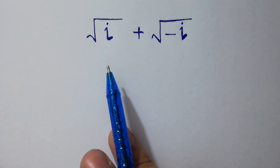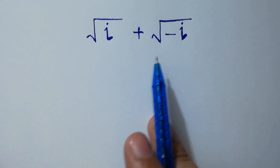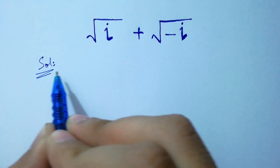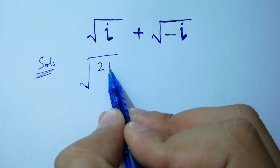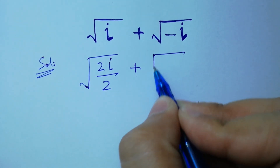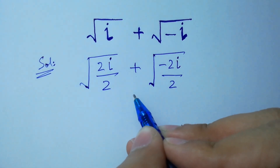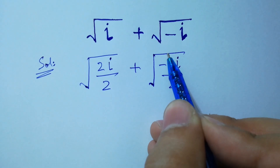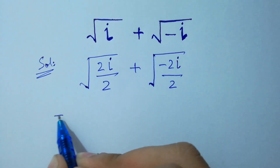Hello friends, what is √i + √(−i)? Let's solve it. This is the same as √(2i/2) + √(−2i/2), because the 2 and 2 will cancel and we get √i + √(−i). I hope you understood. In the next step it will be equal to...